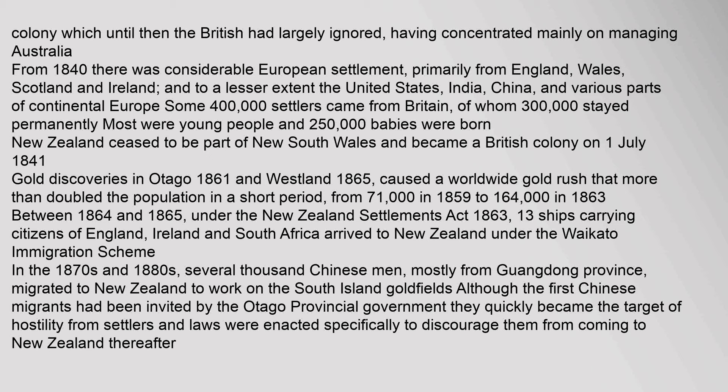From 1840 there was considerable European settlement, primarily from England, Wales, Scotland and Ireland, and to a lesser extent the United States, India, China, and various parts of continental Europe. Some 400,000 settlers came from Britain, of whom 300,000 stayed permanently. New Zealand ceased to be part of New South Wales and became a British colony on 1 July 1841. Gold discoveries in Otago (1861) and Westland (1865) caused a worldwide gold rush that more than doubled the population in a short period, from 71,000 in 1859 to 164,000 in 1863. Between 1864 and 1865, under the New Zealand Settlements Act 1863, 13 ships carrying citizens of England, Ireland and South Africa arrived under the Waikato Immigration Scheme.